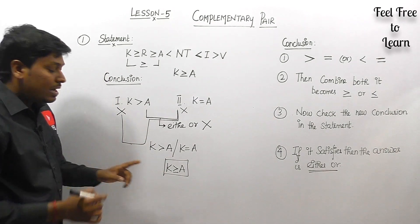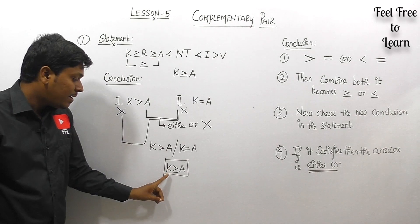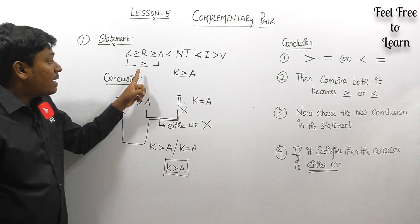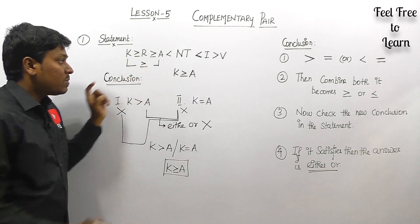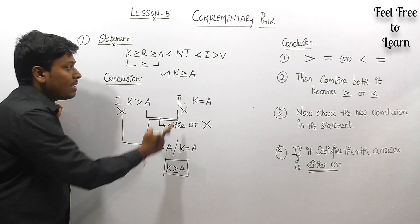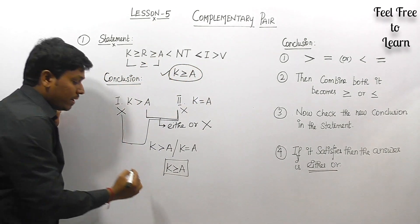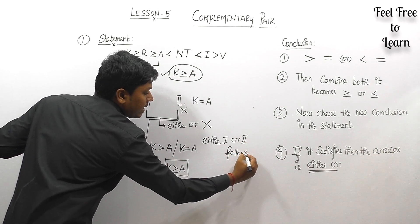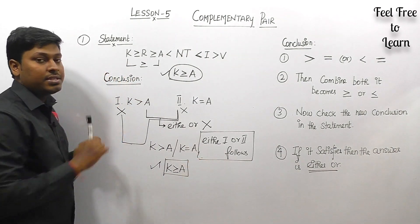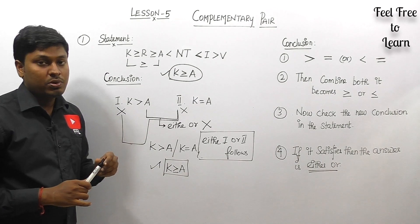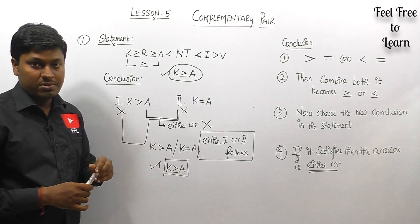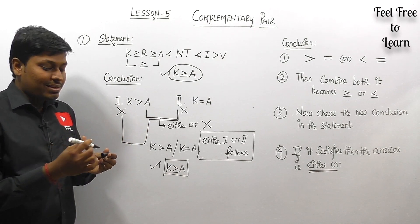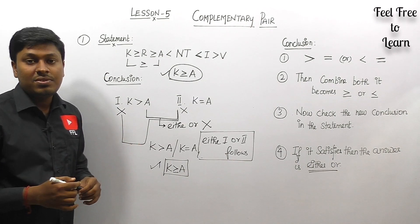Now combine both conclusions: K > A combined with K = A gives K ≥ A. Check this new conclusion in the statement: comparing K and A, we get K ≥ A, which matches. So the new conclusion is true, and the final answer is 'either conclusion one or conclusion two follows.' The meaning of 'either or' here is that K ≥ A follows — either greater than or equal to is satisfied.